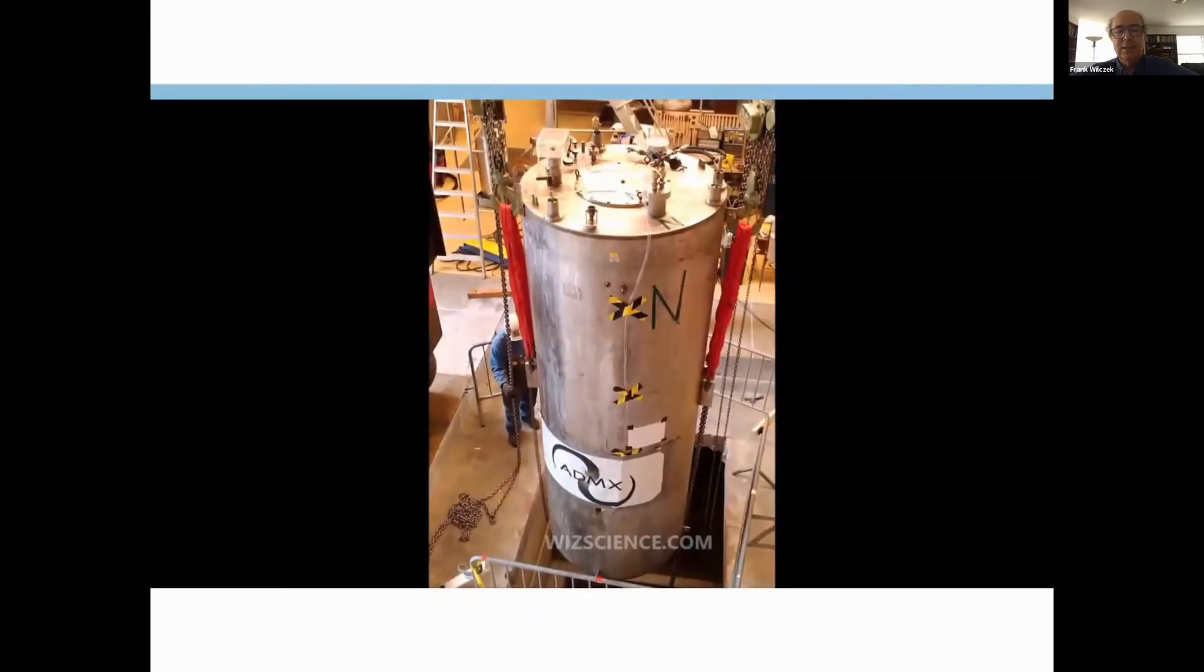This is an existing project which is up and running, the ADMX collaboration, which works at very low temperatures and strong magnetic fields in this particular antenna design, which is very clever. And they are at present at the cutting edge of getting into the kinds of sensitivity you need to detect this axion background if it's there.